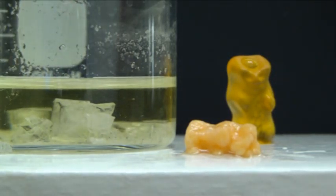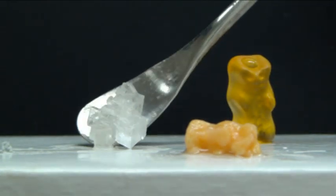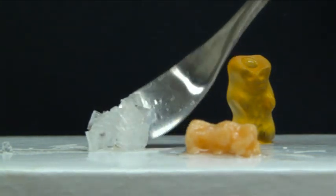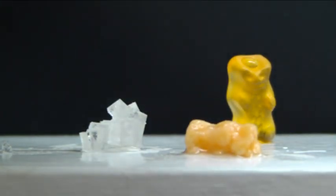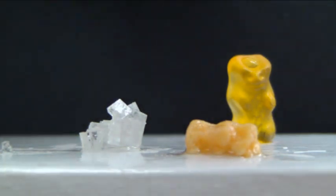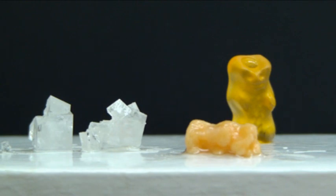When you have a solution that has a lot of solute, and in this case it's the salt that's the solute, these bits of salt can be made to come out of solution in a few ways. One way is to cool the solution down. Now I know I didn't do this because I left my solution at room temperature, but this is how you make, for instance, rock candy.